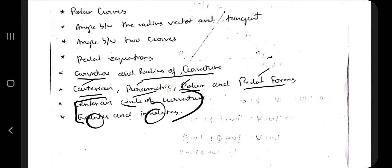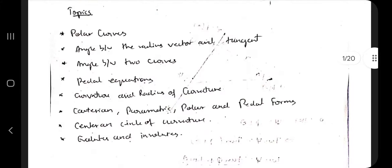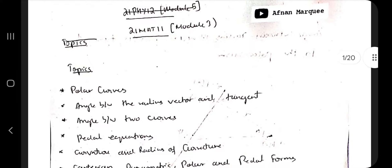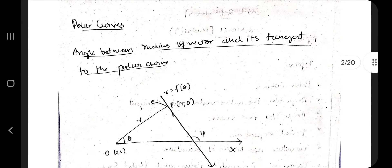We will be discussing all the topics one by one and solving some questions as well. So let's get started with the first derivation, which is under the topic of polar curves — the angle between the radius vector and its tangent.